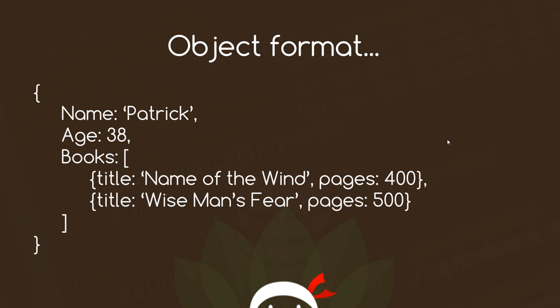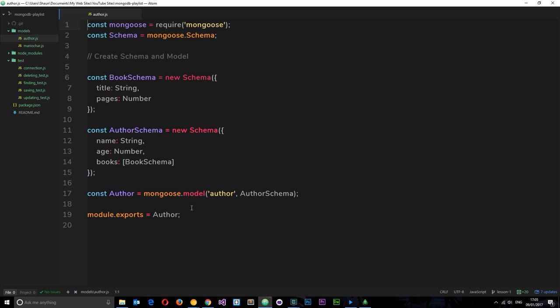In this tutorial we're going to go ahead and create a Mocha test which is going to test creating some authors and adding those sub-documents to them. When I talk about sub-documents I'm talking about the things we're nesting within the author. In the last tutorial we created this model and exported it.